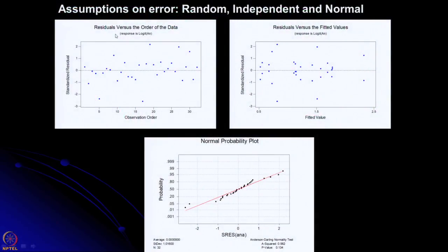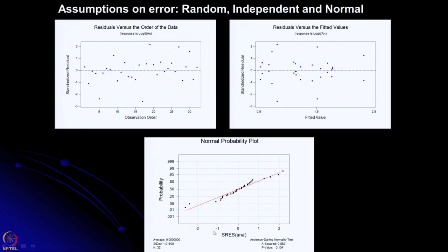These are the confirmation plots for the assumptions on error. The first plot shows that it is a random error. The second also shows no effect of the fitted values — it is also random. This is random with respect to observational order, so there is no systematic change due to the order of observations, and no systematic change due to the fitted values. The normal probability plot of the standardized residuals for logit transformed percentage anatase falls on the straight line, confirming that it is normally distributed and our assumptions are correct.